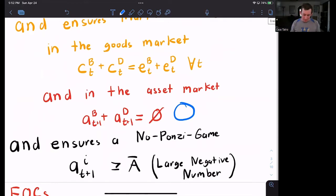We also said that each person can't go into infinite amount of debt. So we said, okay, your AT plus one has to be greater than or equal to some large negative number at all times. And that was called the no-Ponzi game condition.